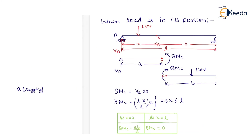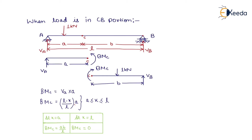Now for the second condition, when the unit load is in the CB portion, considering the left section AC, the bending moment at C equals Va into A, which gives (L minus x)/L into A. This equation is valid for x between A and L. At x equals A, bending moment at C equals AB by L, and at x equals L, bending moment at C equals 0.